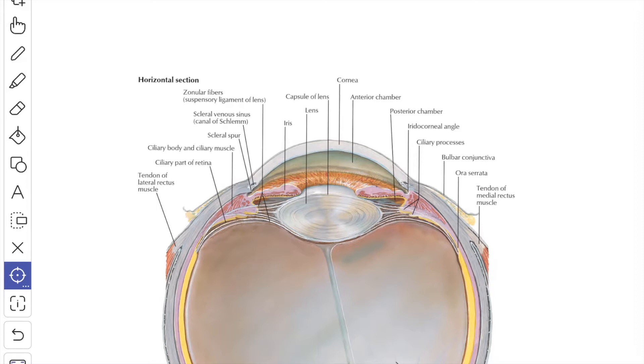The aqueous humor is formed by active process and by diffusion from the capillaries of the ciliary processes and is initially collected in the posterior chamber. From the posterior chamber, the fluid appears in the anterior chamber by passing through the pupil.